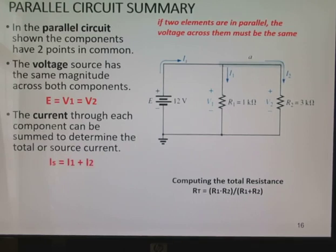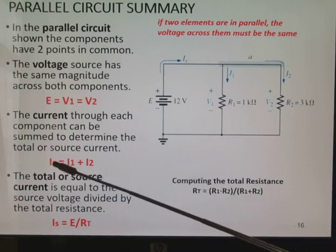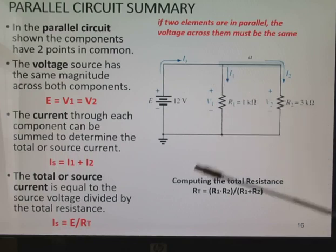The current through each component can be summed to determine the total source current. So we have the source current or the total current reaches this node, breaks up into two places. So IS equals I1 plus I2. The total or source current is equal to the source voltage divided by the total resistance. So another way to find the source current or the total current is to find the total resistance. And that is found by R1 times R2 over R1 plus R2 and divide that by E, which is the source voltage.